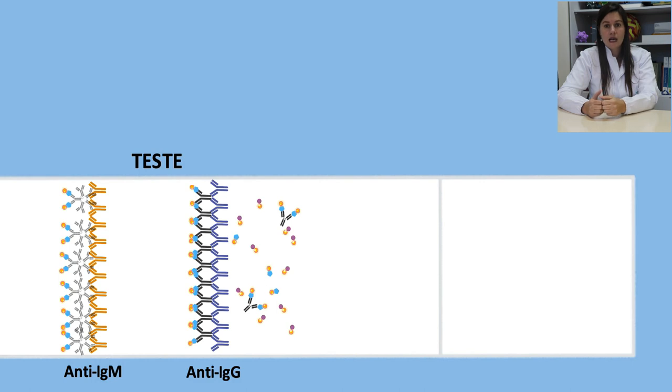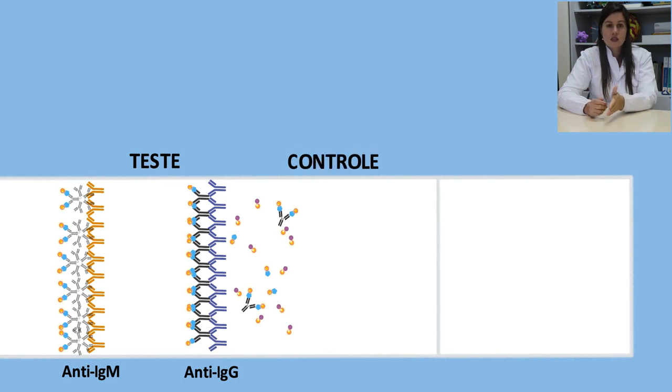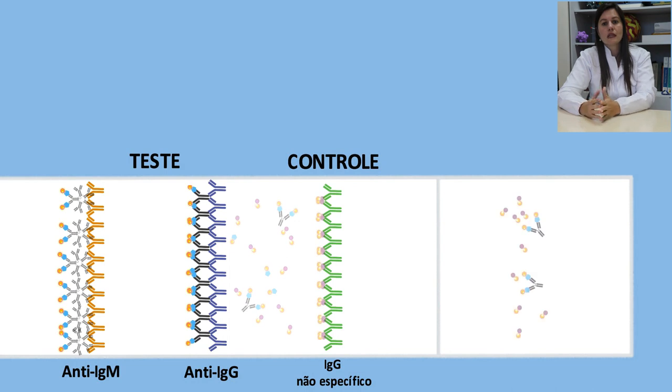As moléculas que não se ligaram nem na região IgM nem na região IgG, incluindo a outra parte do conjugado, que consiste da proteína A ligada no ouro coloidal, continuam a migração até a área C. Nessa região, a proteína A se liga ao anticorpo, formando uma outra linha colorida.